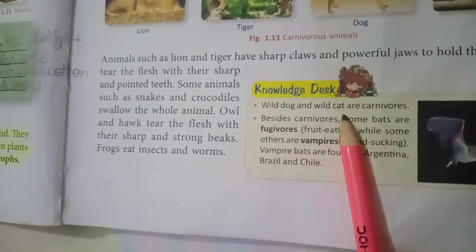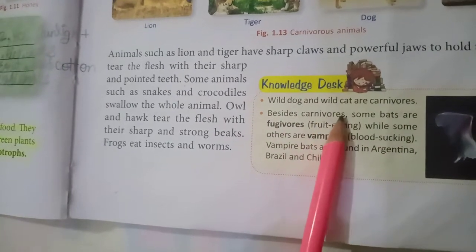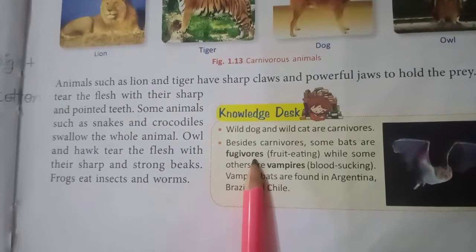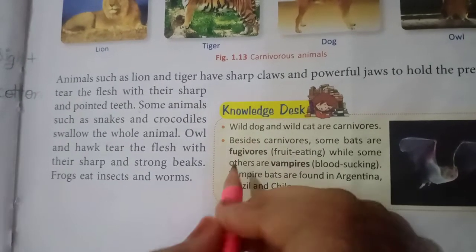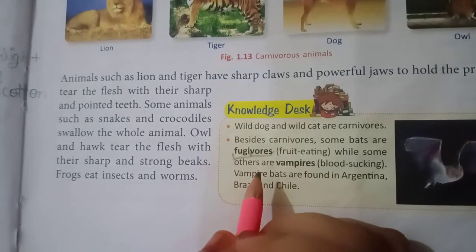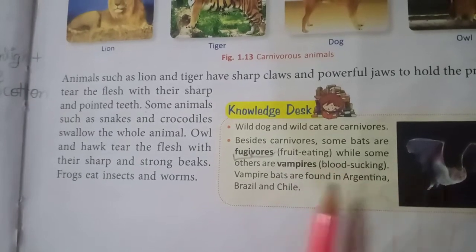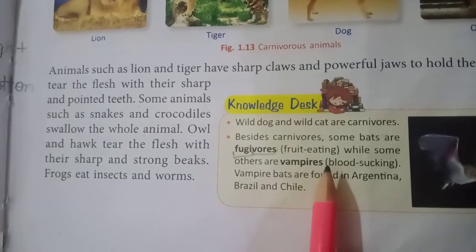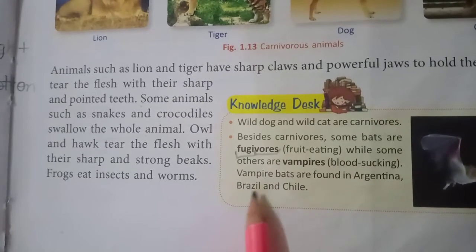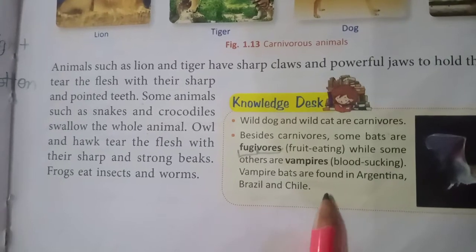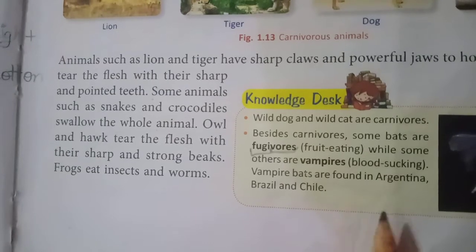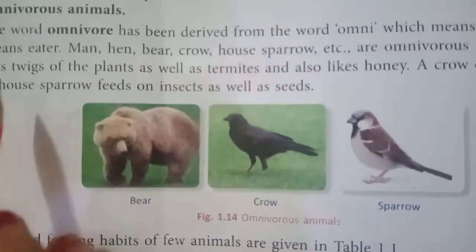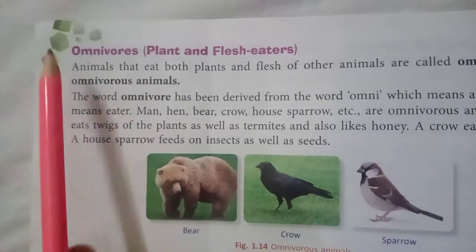Besides carnivores, some bats are frugivores — 'frugi' means fruit and 'vore' means eater — so they eat fruit, not flesh. Some other bats are vampire bats, which are blood-sucking. Vampire bats are found in Argentina, Brazil, and Chile.